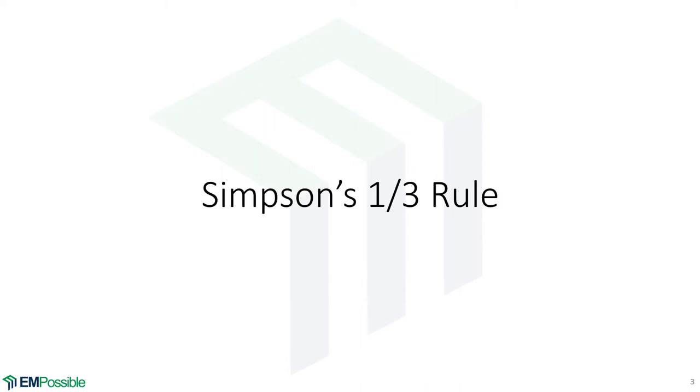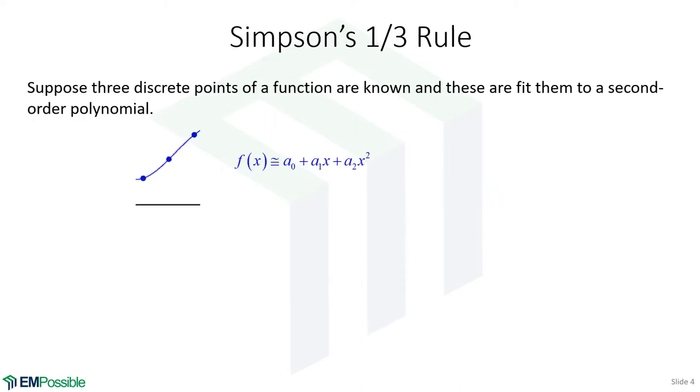Simpson's 1/3 rule. Suppose we have a function, and we're looking at three discrete points of that function. We could fit those three points to a second-order polynomial, a0 plus a1 times x plus a2 times x squared. Now, we have not learned yet how to fit polynomials to curve. That comes later, but let's pretend we can do that, and we can somehow calculate number values for a0, a1, and a2.